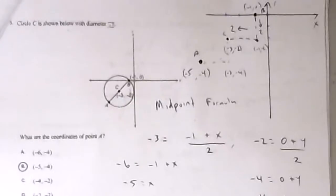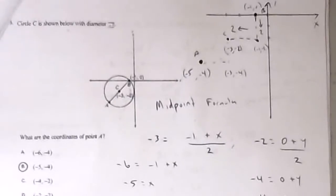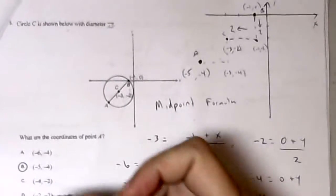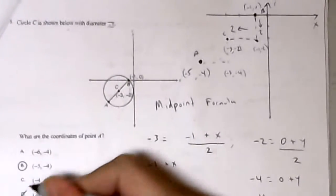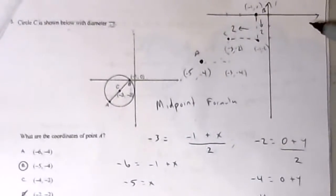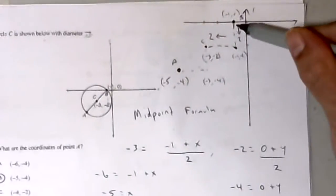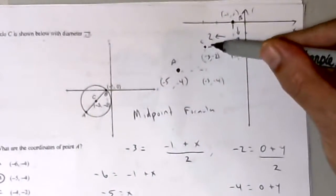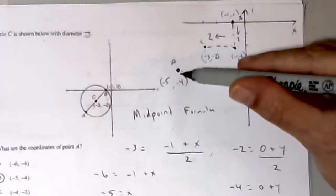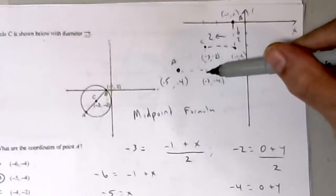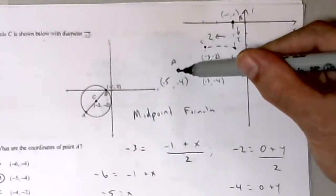Circle C is shown below with diameter AB. What are the coordinates of point A? The x-coordinate of point A has to be less than −3, so I can rule out some options. The y-coordinate has to be less than −2. I can see I'm going down 2 and left 2 to get to point C from B, so I go down 2 and left 2 from C — giving (−3, −4) then left 2 more to (−5, −4).